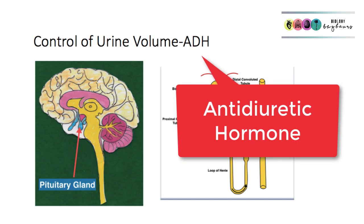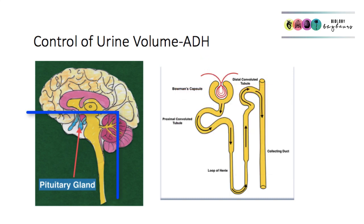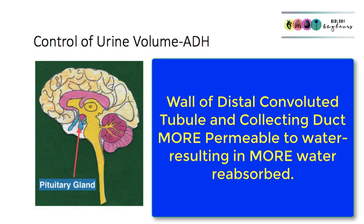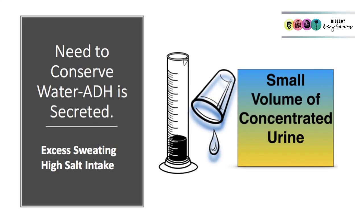ADH is made in the hypothalamus but it's secreted by the pituitary gland. It acts on the walls of the distal convoluted tubule and the collecting duct, making them more permeable to water, resulting in more water being reabsorbed. When your body needs to conserve water — for example after excessive sweating, high salt intake, or dehydration — ADH is secreted by the pituitary gland. This results in a lot more water being reabsorbed, producing a low volume of highly concentrated urine.